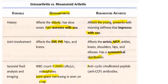On exam questions: osteoarthritis will involve an older or elderly patient, while rheumatoid arthritis will involve a young patient presenting with symmetrical distribution, ulnar deviation, and swan neck deformity.